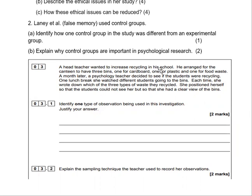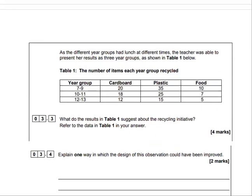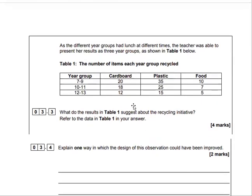A geography teacher wanted to increase recycling in a school and arranged for three bins to be placed. Each time she observed, she positioned herself where students could not see her, but she had a clear view of the bins. Identify one type of observation and the sampling technique used. The results were then tabulated — explain what they suggest about the recycling initiative, and suggest one way in which the observation design could have been improved.